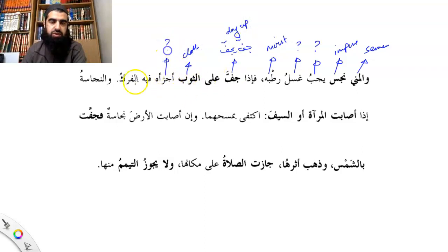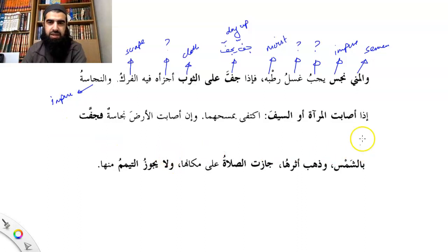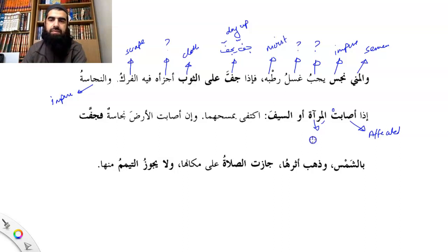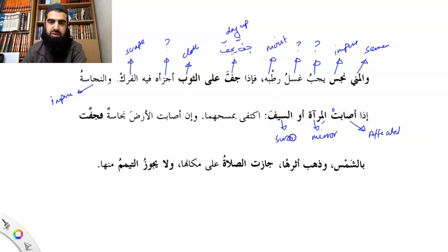Thawb means clothing. Ajza' — ajza' means parts. Al-farq means to scrape something off. Najasa means impurity. As-saabat means to become affected or afflicted with something. Al-mir'at — note it's mir'at, not mar'a. Mar'a is a woman; mir'at is a mirror. In fact, the English word 'mirror' has actually come from the Arabic word mir'at — it's one of those borrowed words.